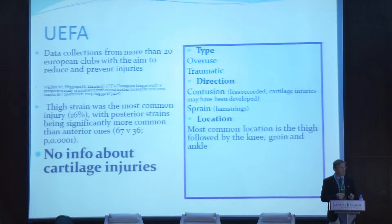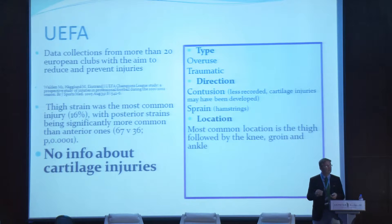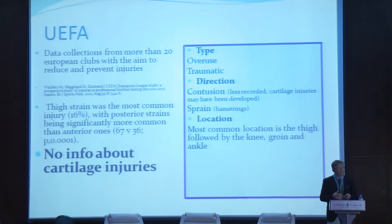We have done a lot of studies on sport injuries and especially on football. Valdin, cited earlier today, found that the most common injury was thigh strains, followed by posterior strains being significantly more common than anterior ones — but no information about cartilage injuries. The type of injury was overuse or traumatic, and the direction was contusion and sprain. You could think of contusion as causing cartilage injuries, and perhaps sprain indirectly. Location: most common was thigh, followed by the knee, groin, and ankle.